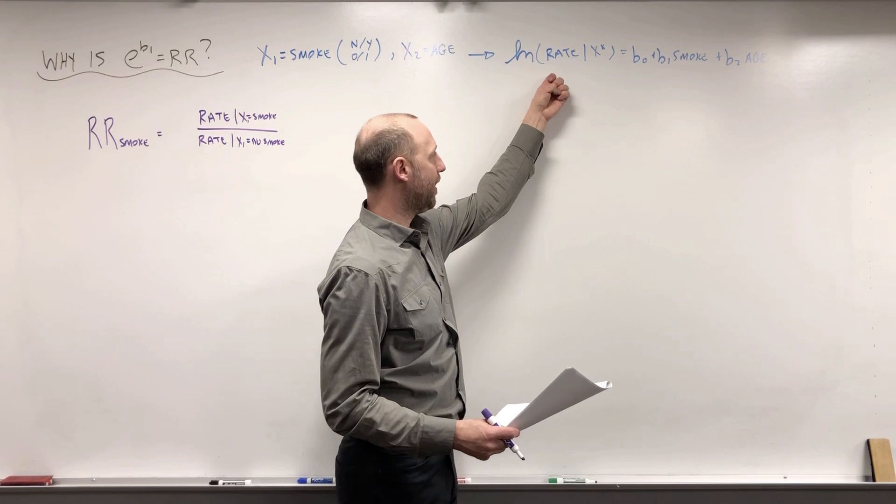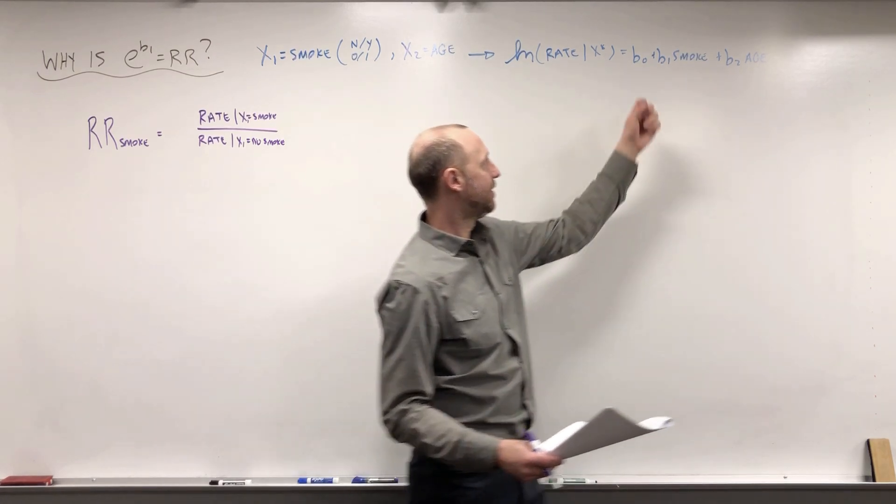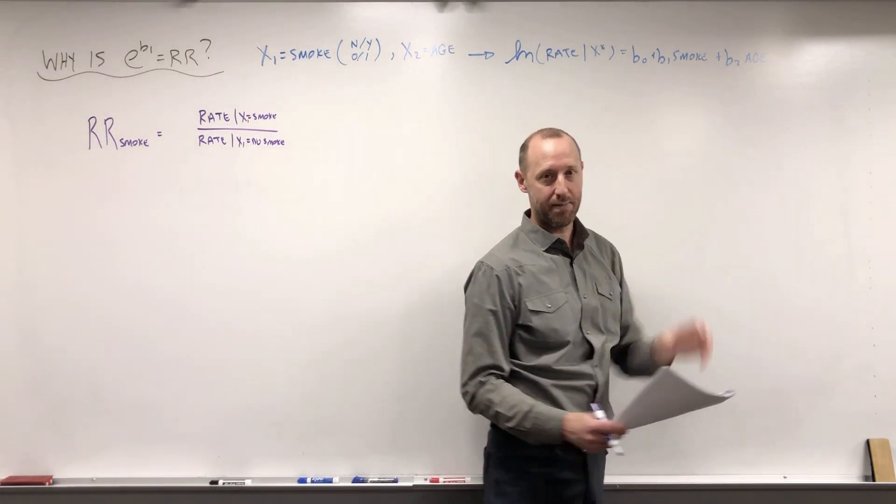So we're going to model the log rate given the x's using b0 plus b1 times smoke plus b2 times age.